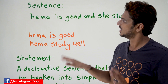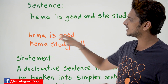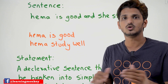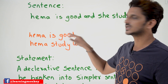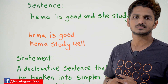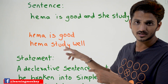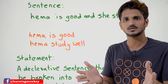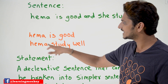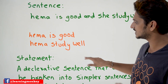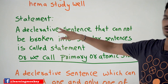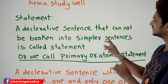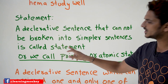Let's understand with an example. If you take this sentence, 'Hema is good' — can you divide this sentence into simpler sentences? No. We call this a statement. That is the meaning of the first condition: a declarative sentence that cannot be broken into simpler sentences is called a statement.